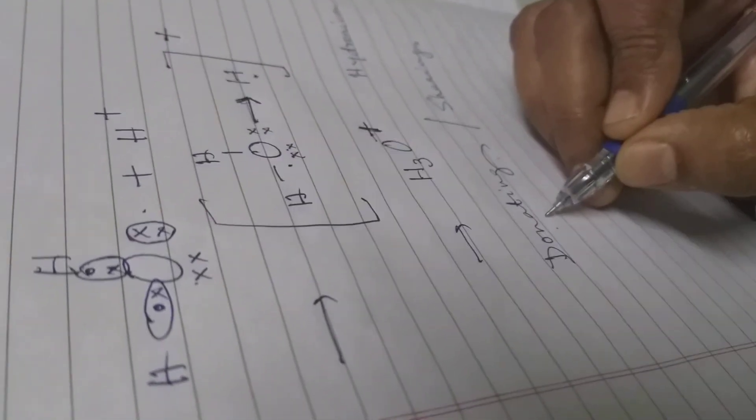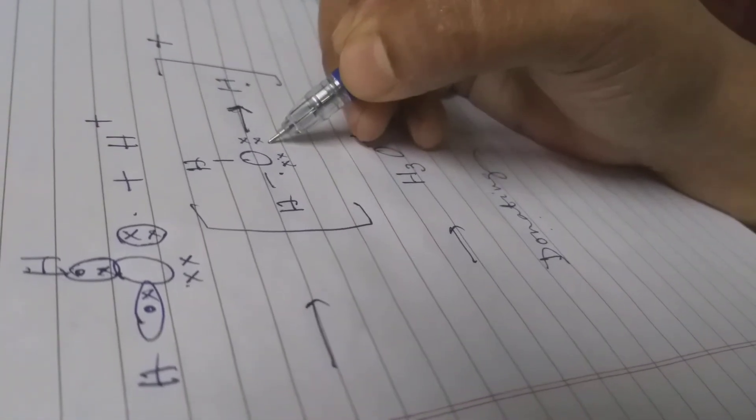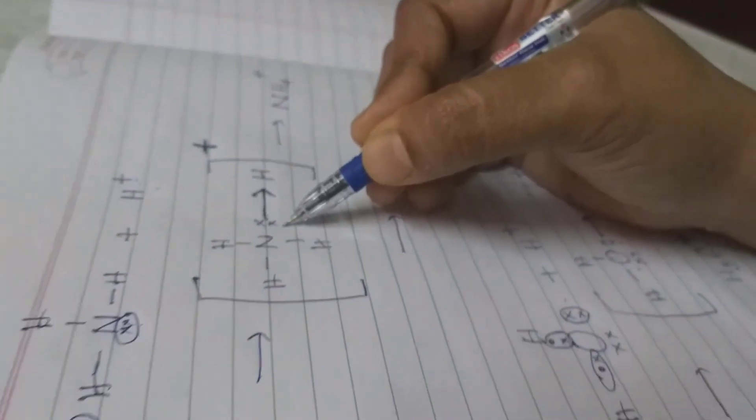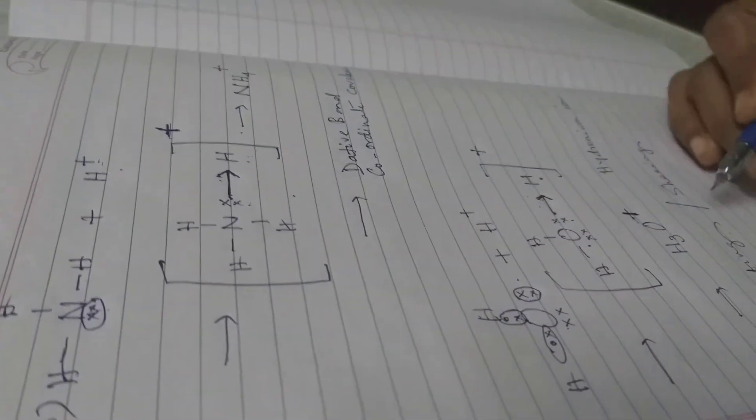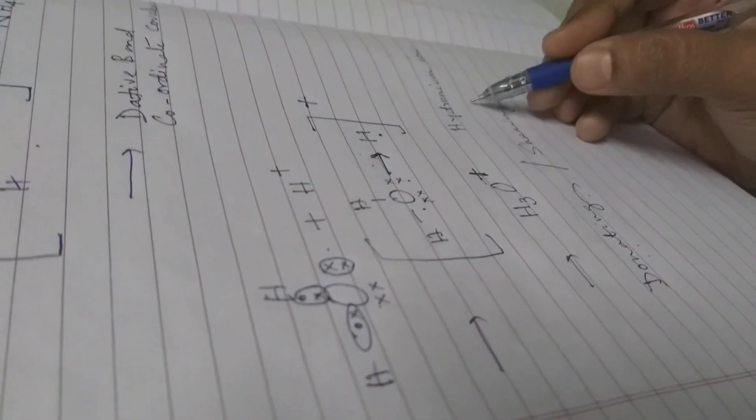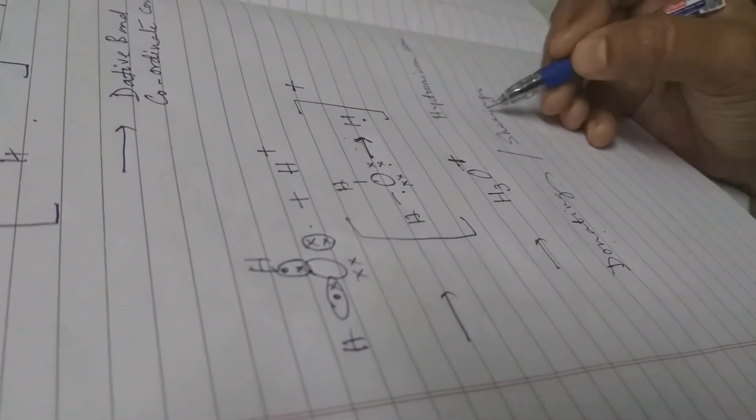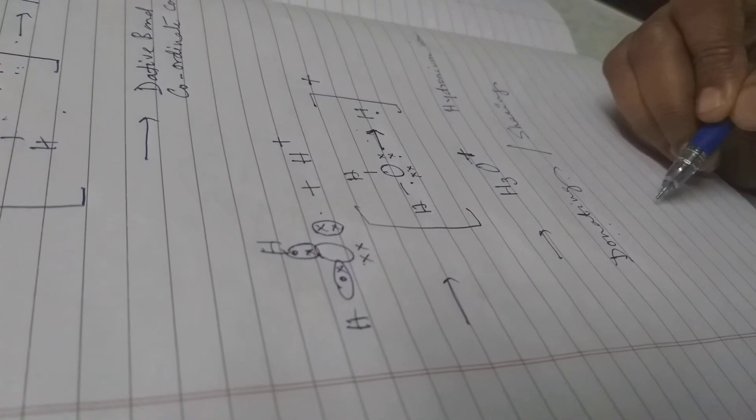Here oxygen is donating a pair of electrons, here nitrogen is donating a pair of electrons. So this is known as dative bonding. Please look at this video again if you are not sure.